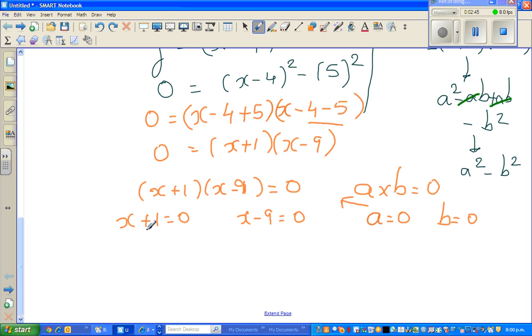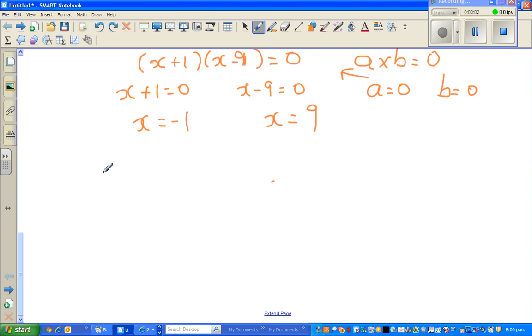When would this become 0? What number plus 1 gives you 0? This number has to be negative 1, so x is negative 1. And when would this become 0? That is when x equals 9. We can see what are our x-intercepts.